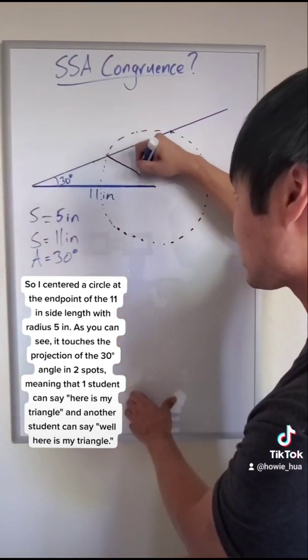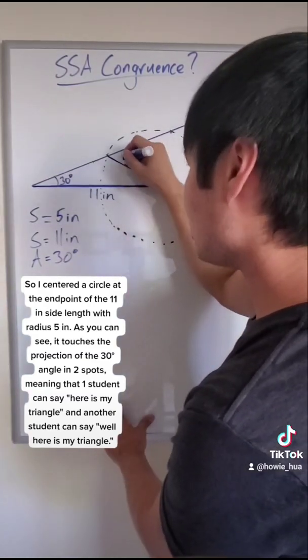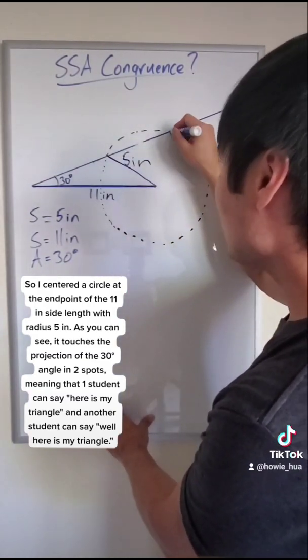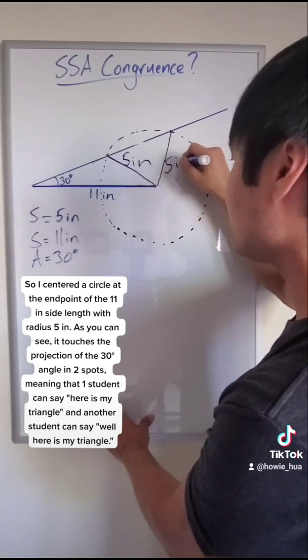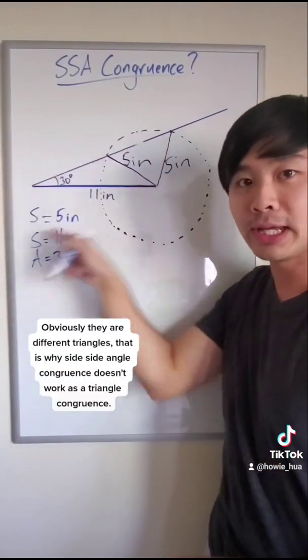As you can see, it touches the projection of the 30 degree angle in two spots, meaning that one student can say, here is my triangle. And another student can say, well, here's my triangle. Obviously, they are different triangles. That is why side side angle congruence doesn't work as a triangle congruence.